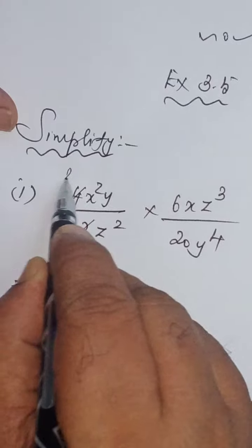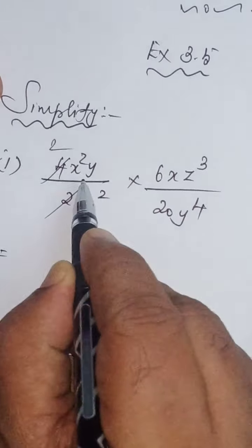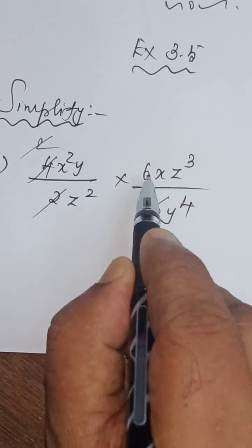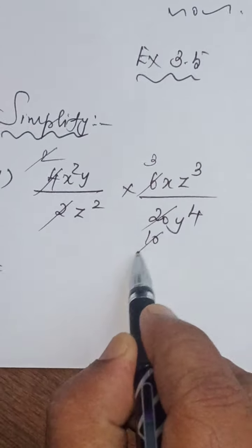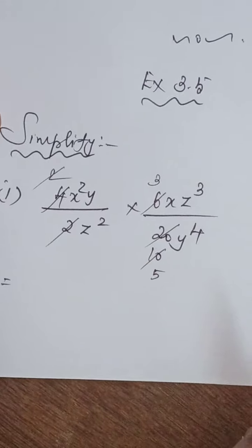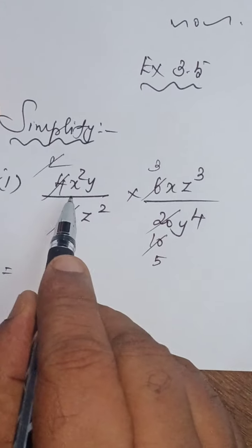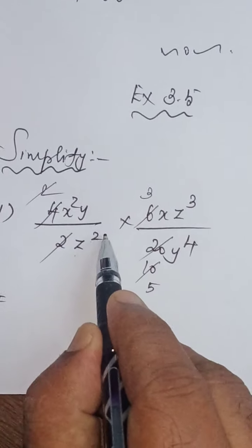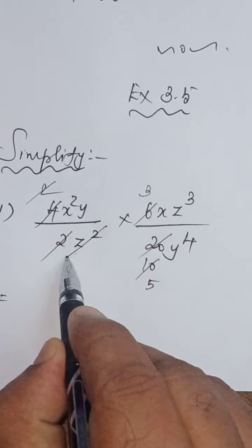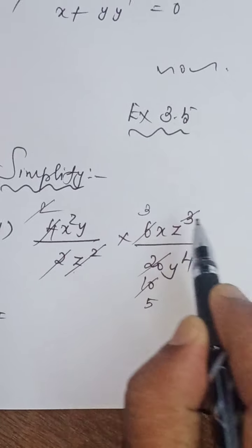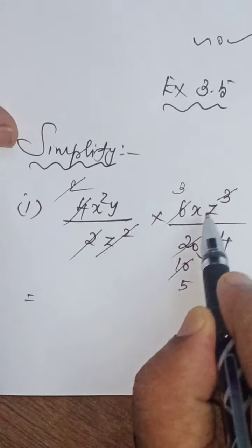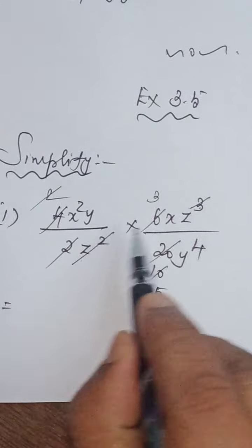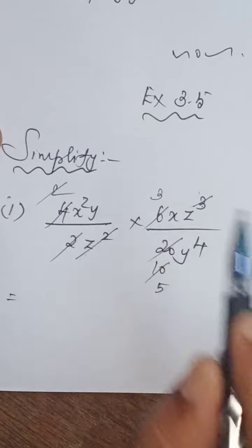2 times and 10 times — 6 and 10 we can cancel by 2, giving 3 times and 5 times. This is z squared and z cubed; these two get cancelled. z squared gets cancelled — z will be there because in division you have to subtract the powers. This is power 3, this is power 2; 3 minus 2 equals 1, so z power 1, that is z.